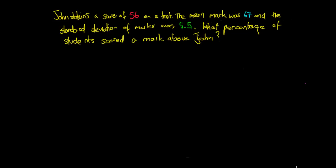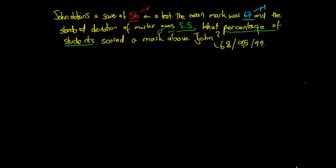When we look at that, we can see we've been given our x value, we've been given our mean of 67, and we've been given our standard deviation. So automatically we know we can work out a z-score. And what we have here is a 68, 95, 99.7 rule question.